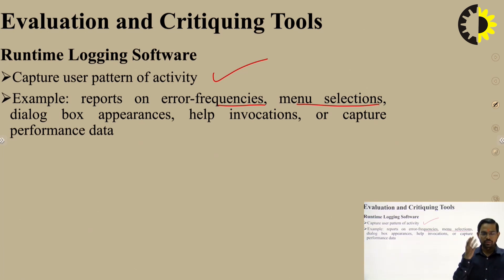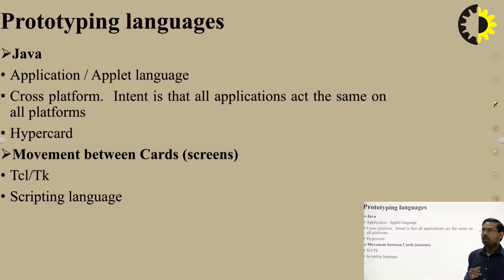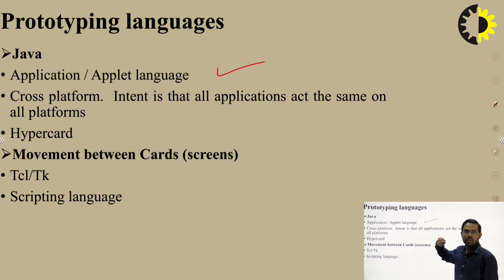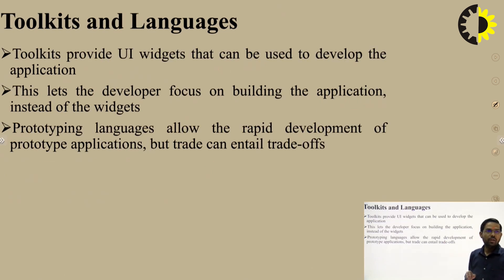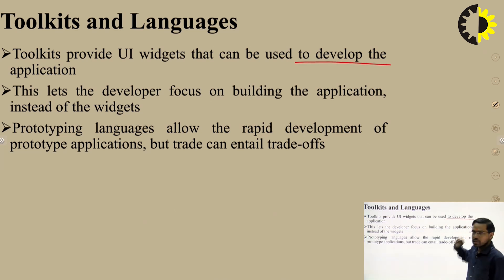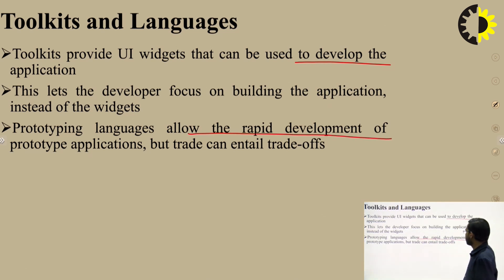Prototyping languages: Java is used as an application update language — it is cross-platform, intended for all applications on all platforms. HyperCard supports movement between cards or screens. Tcl/Tk and scripting languages are also used. Toolkits provide UI widgets that can be used to develop applications, allowing developers to focus on building the application. Prototyping languages allow rapid development of prototype applications but can entail trade-offs.